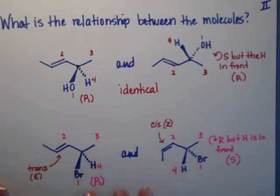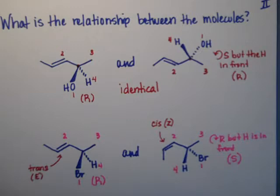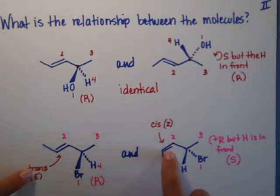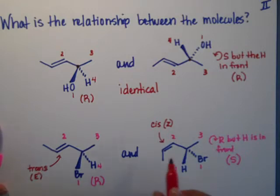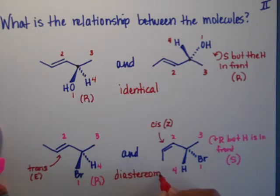Now I know the chiral center is opposite, but it doesn't matter because these molecules right here, because of the double bond, they will never be mirror images of each other. And if they're never mirror images of each other and they're connected the same, then we have to actually call them diastereomers. Cis and trans are diastereomers of each other.